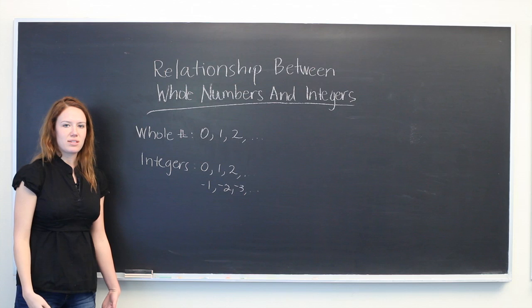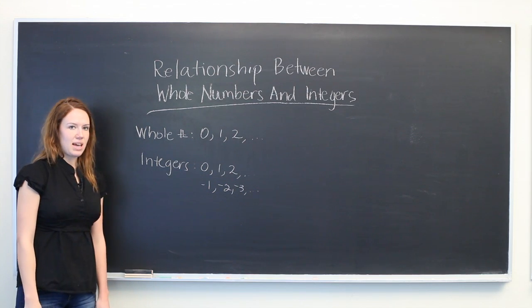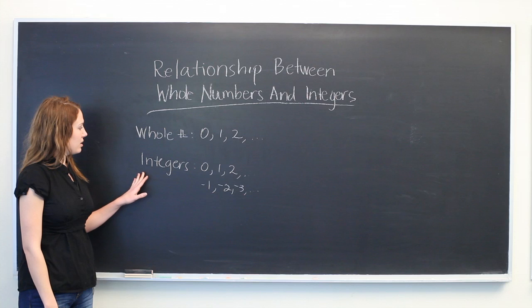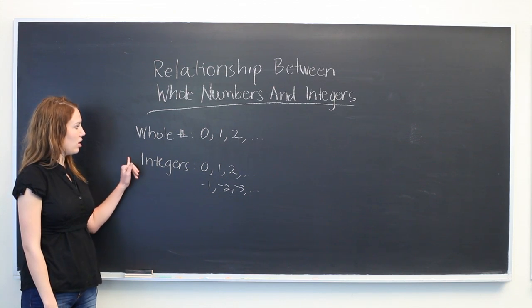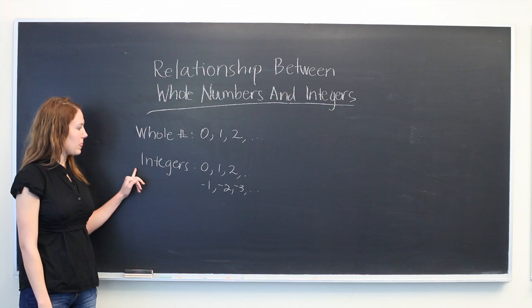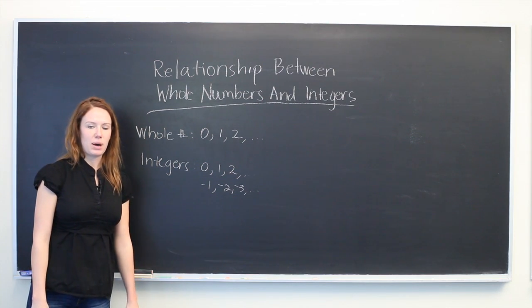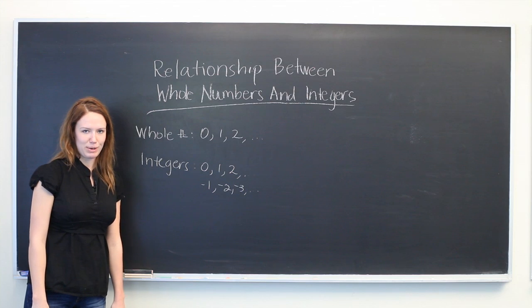When we ask what's the relationship between whole numbers and integers, we could say that a whole number is an integer, and that an integer contains whole numbers and the opposites of the positive constant whole numbers.